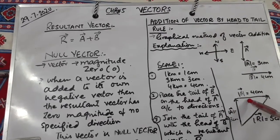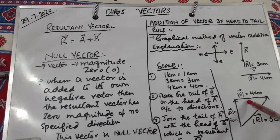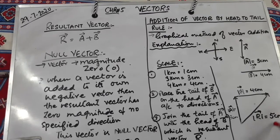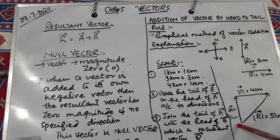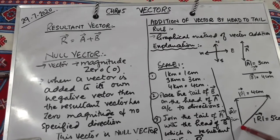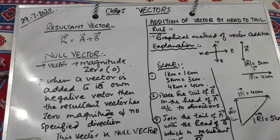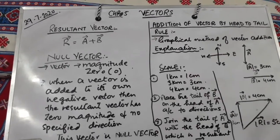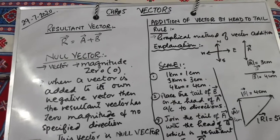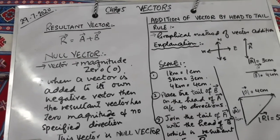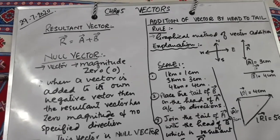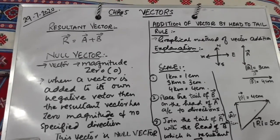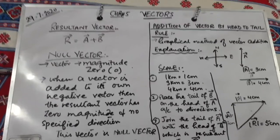Now if there are two vectors, or further three or four, each subsequent vector's tail is placed on the head of the previous one. Finally, the resultant vector goes from the tail of the first to the head of the last. We can apply this for three or more vectors in the same way.